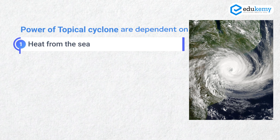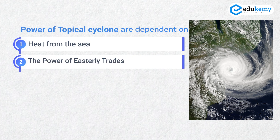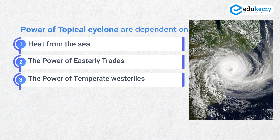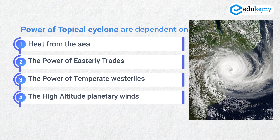Now, one question — what does the power of a tropical cyclone depend on? I'll give four choices: number one, the heat from the sea; number two, the power of the easterly trades; number three, the power of the temperate westerlies; and number four, the high altitude planetary winds — the upper tropospheric winds. The answer is all four are correct. Most of you might miss out the role of temperate westerlies — they also play a role in energizing tropical cyclones towards India.